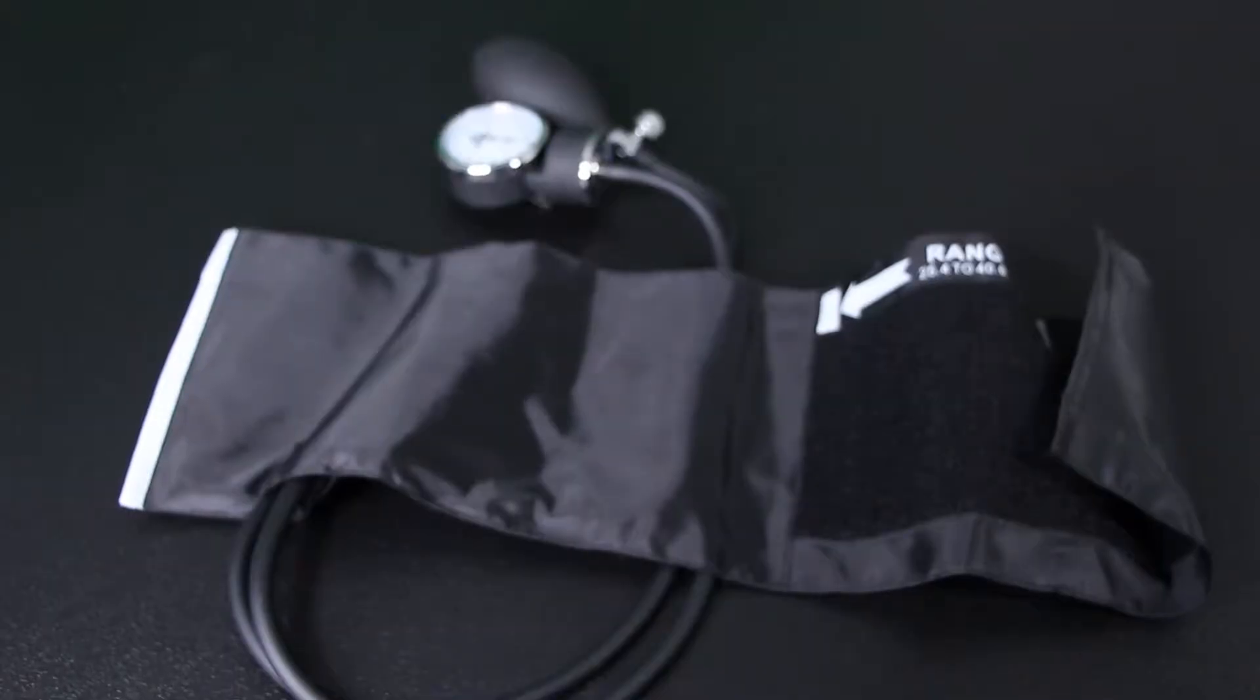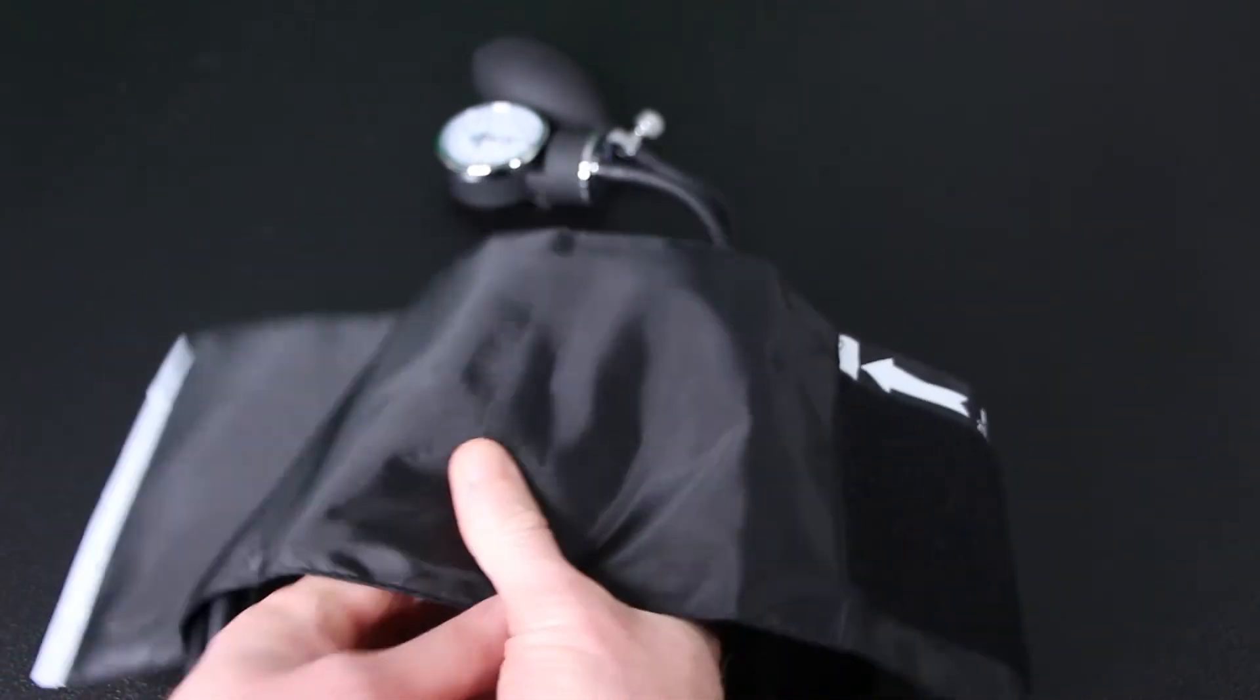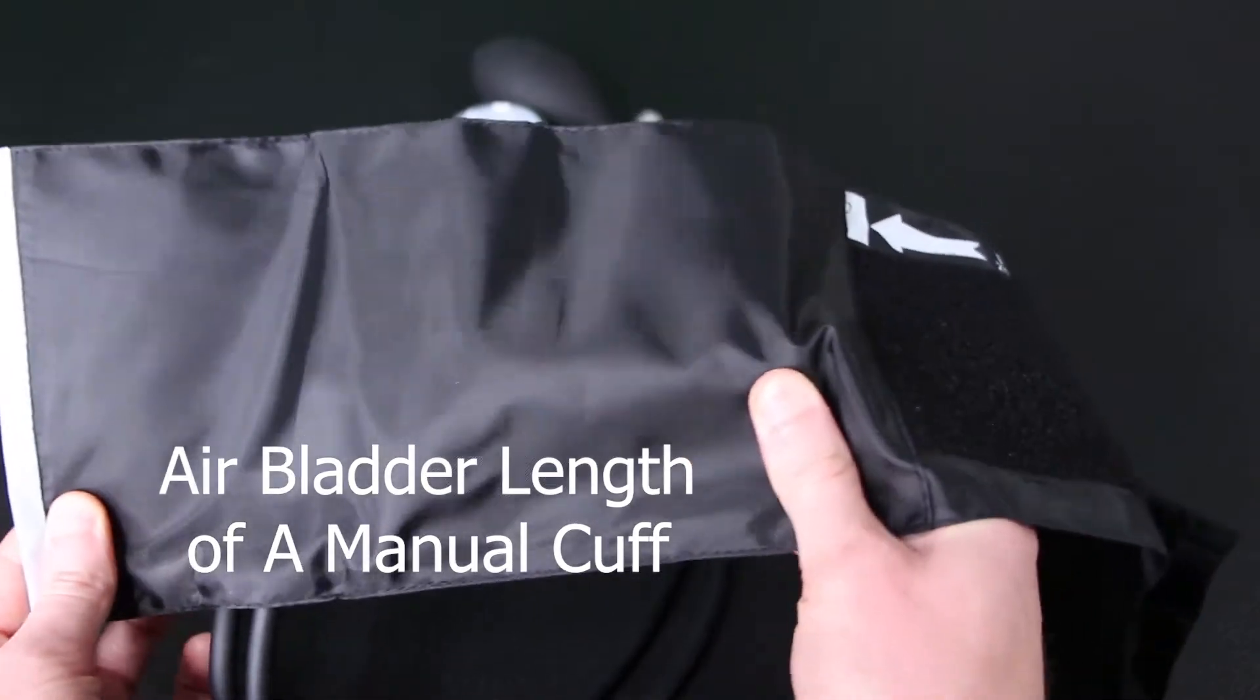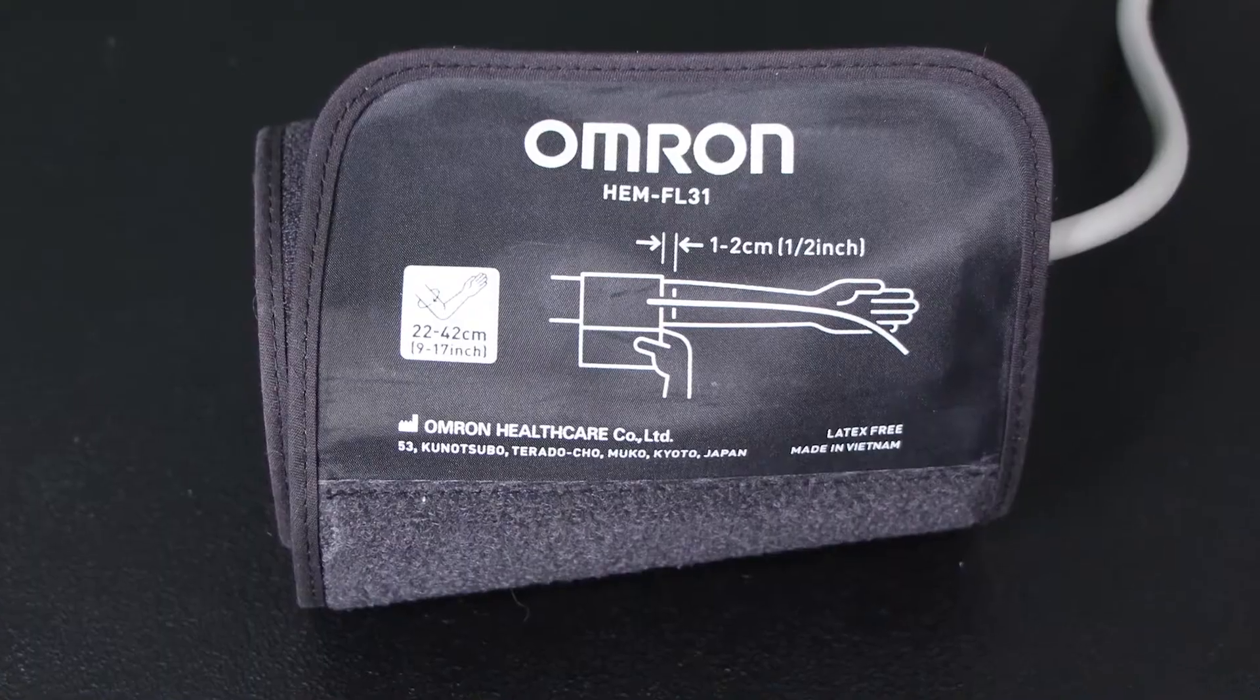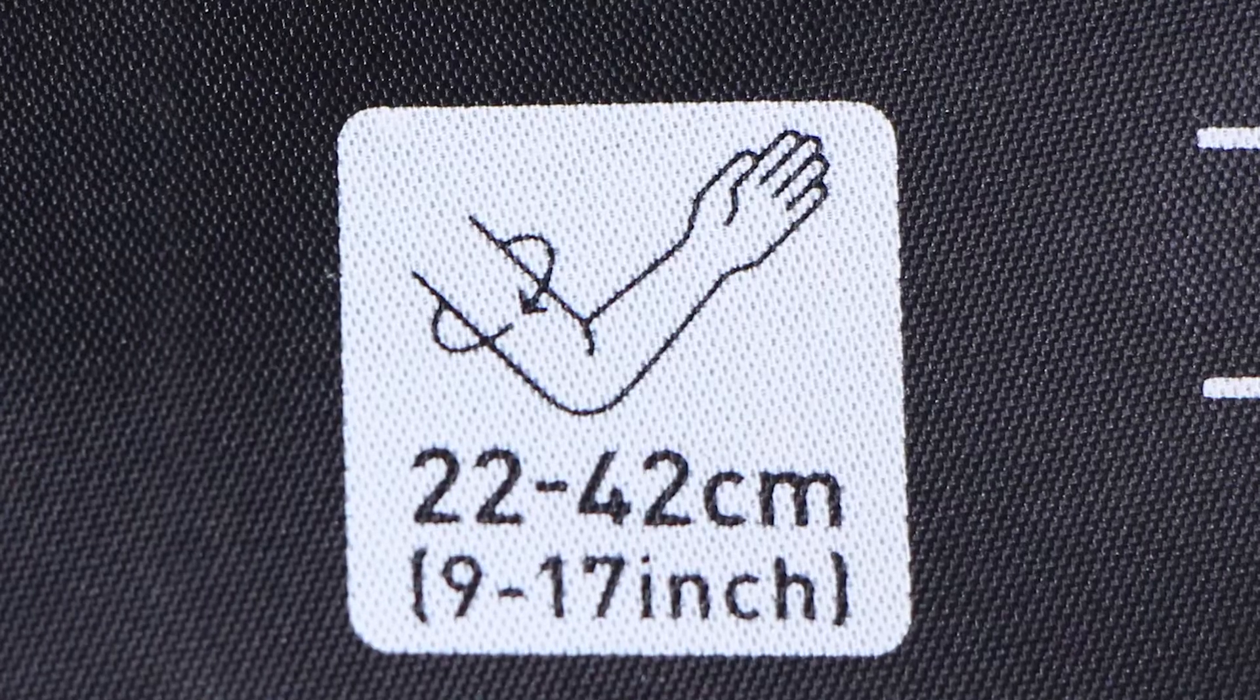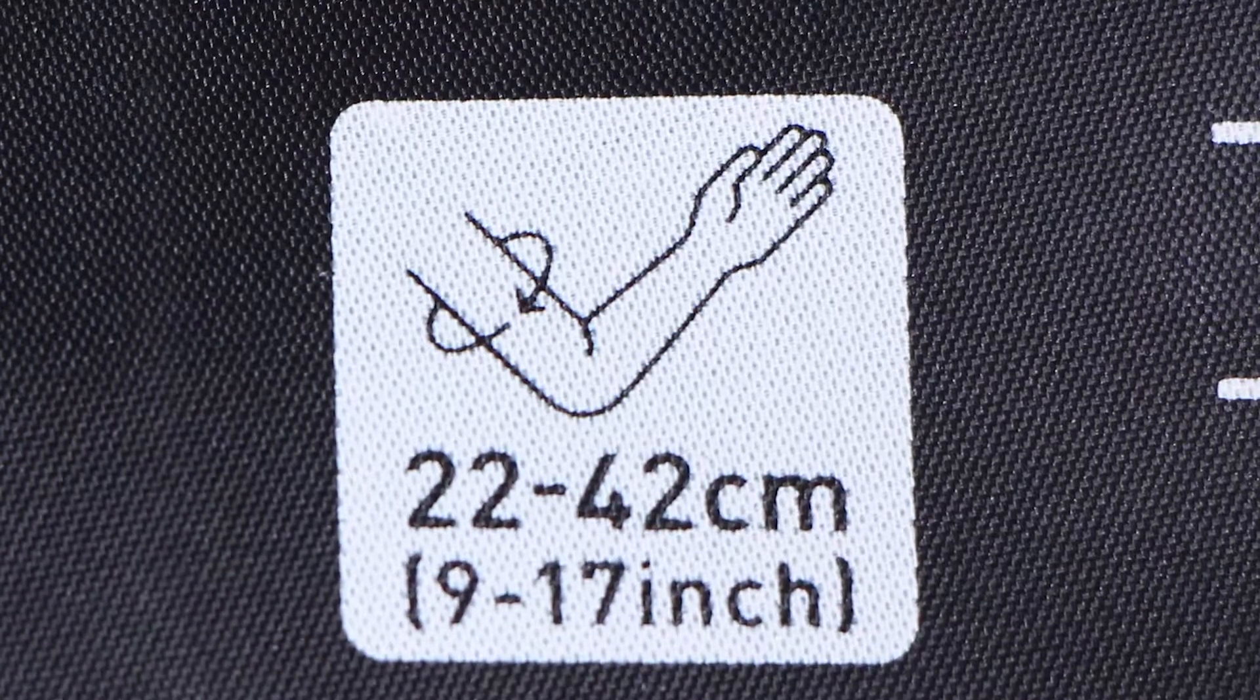It's important to make sure that you're using the proper size cuff. Typically what you're going to want to do is find a blood pressure cuff with an air bladder in it that's going to be able to go between 80% and 100% around your arm. Not more, not less. The Easy Wrap style cuff that I'll be showing in this video is meant for arms with a circumference between 22 and 42 centimeters or 9 to 17 inches.